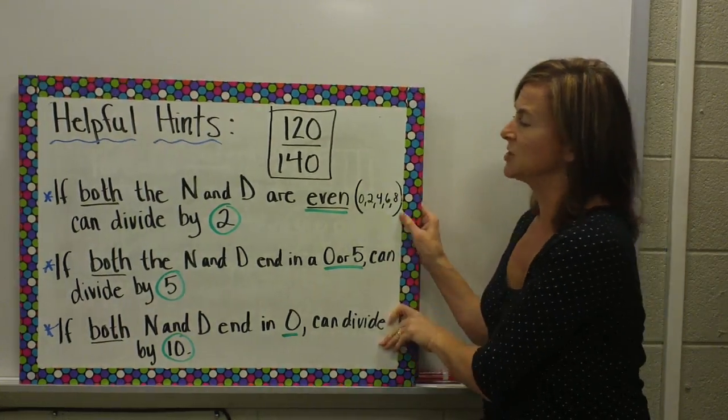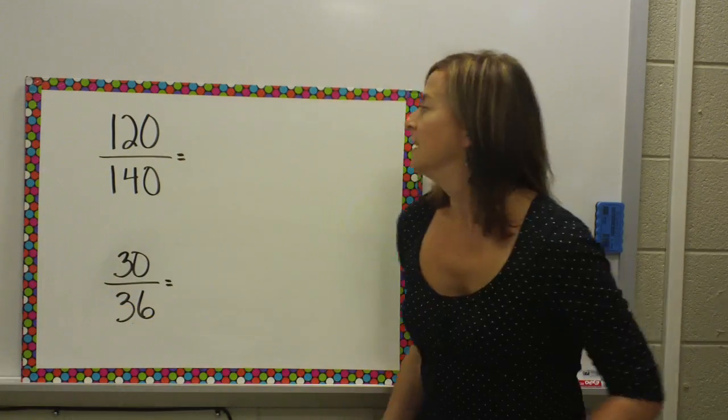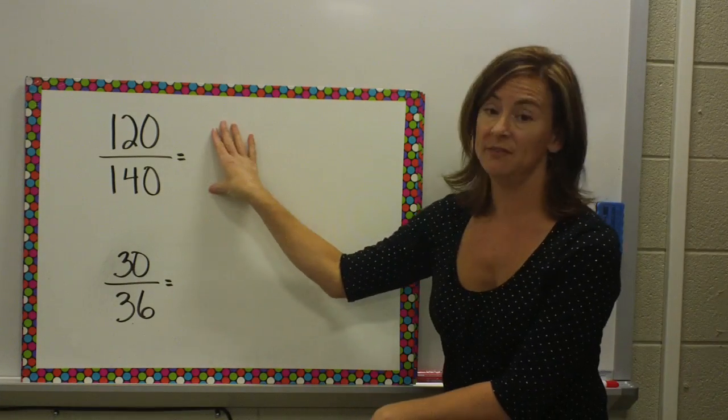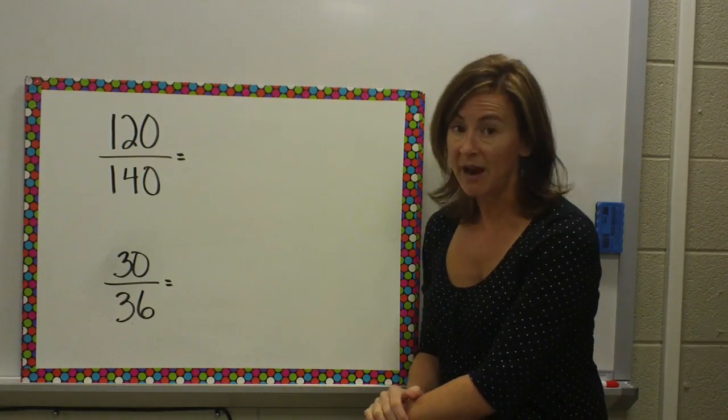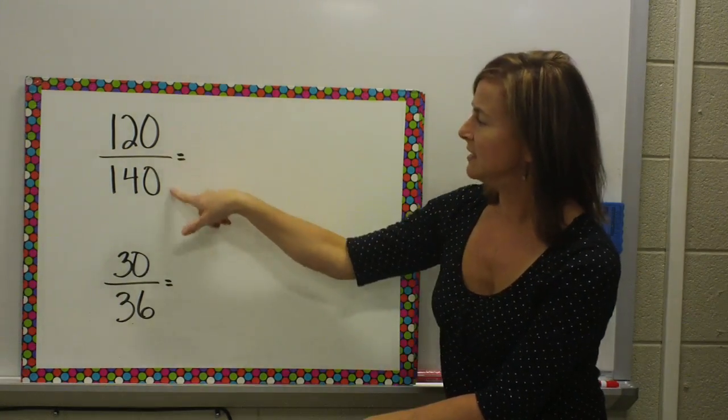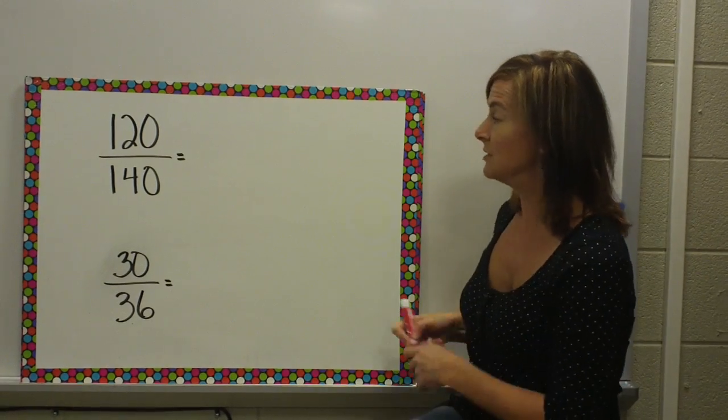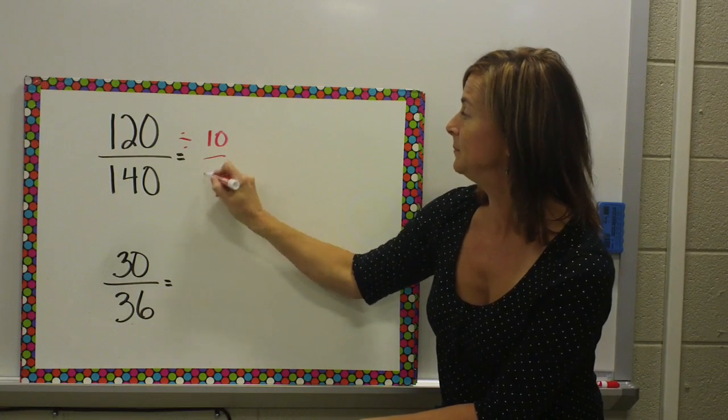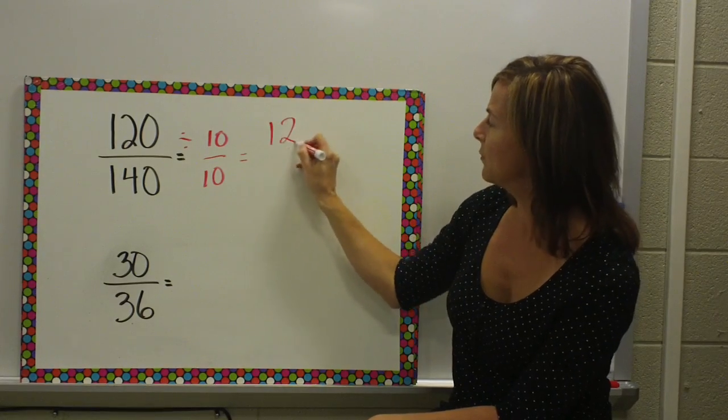Let's take a look at our fraction example here. The best way to go is to think of the largest number you can divide both of these by. But, if I don't know the greatest common factor, I like the idea of noticing that both of these end in a 0, so I can start by dividing both of them by 10.